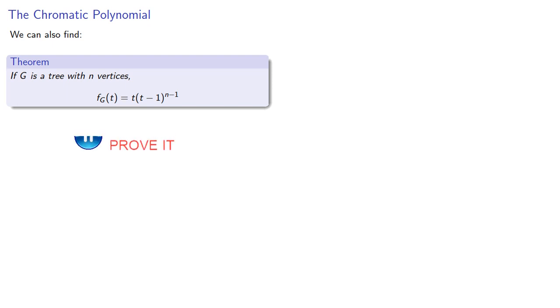We can also find that if g is a tree with n vertices, the chromatic function is... And based on three examples, we might suspect the chromatic function is in fact a polynomial function.